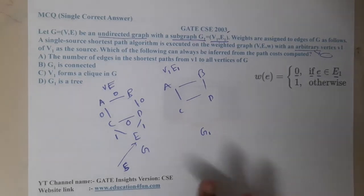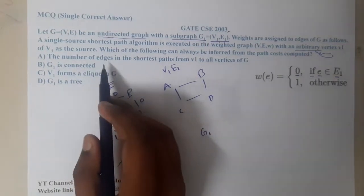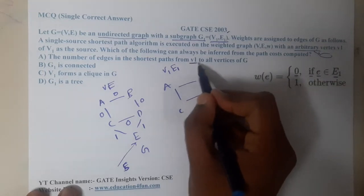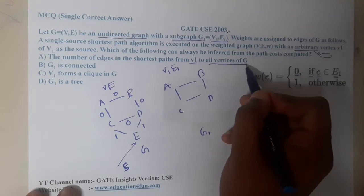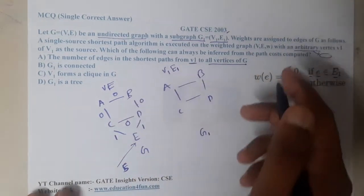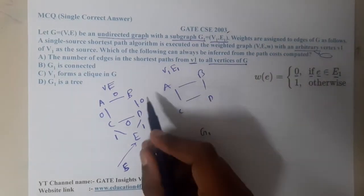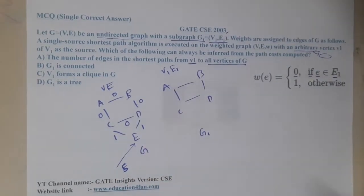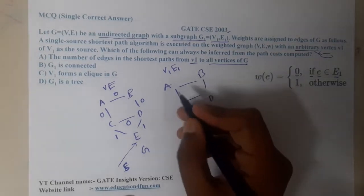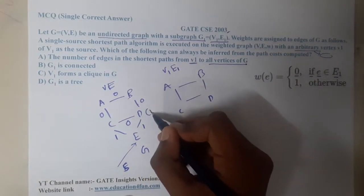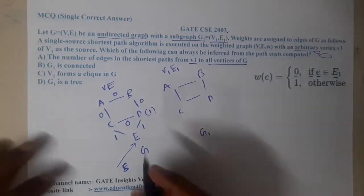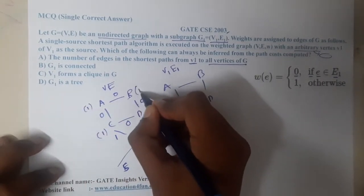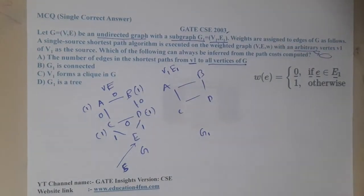Based on the path cost, what can we say? We are going to find the shortest path from v1 to all vertices. Running Dijkstra's from e: from e to a the cost is 1, from e to another neighbor the cost is 1, and similarly other edges with weight 1 each give cost 1.